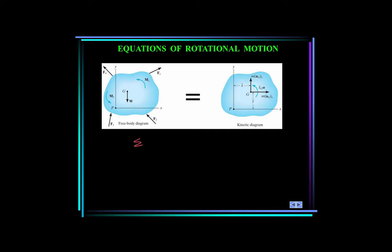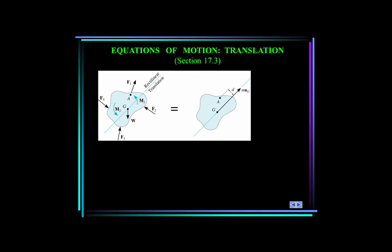We can use three independent scalar equations of motion for general planar motion: summation of forces in x equals m times a_Gx; summation of forces in y equals m times a_Gy; and summation of moments about the mass center equals I_G times alpha. When a rigid body undergoes only translation, all particles have the same acceleration, so a_G equals the body's acceleration and angular acceleration alpha equals zero.